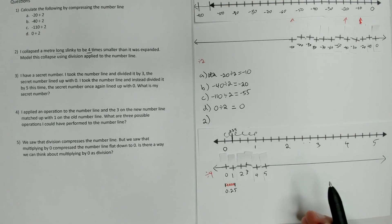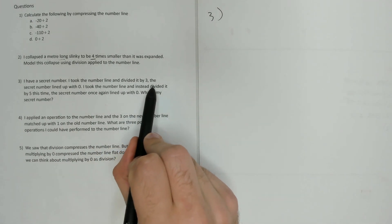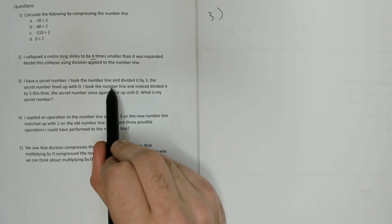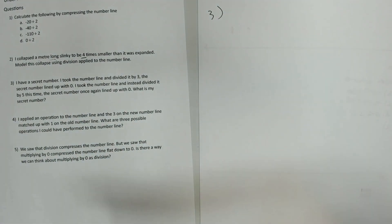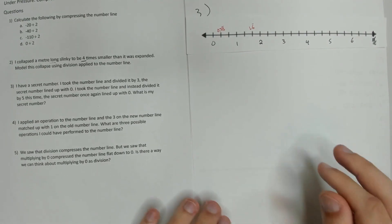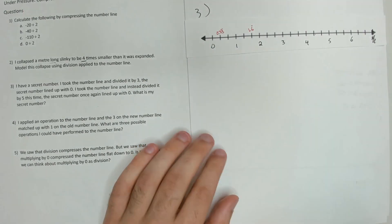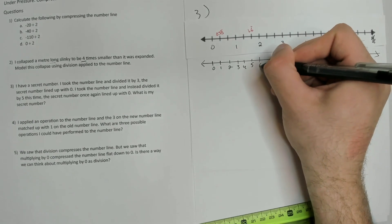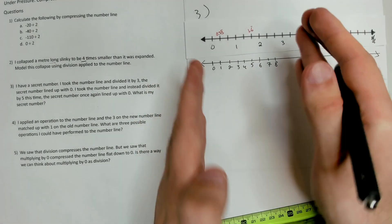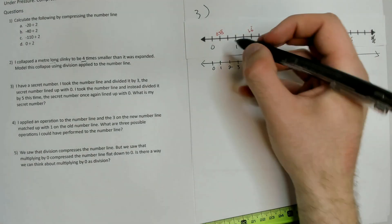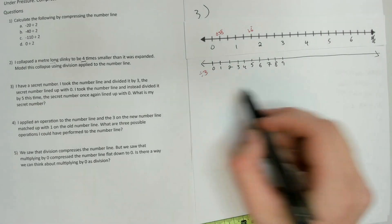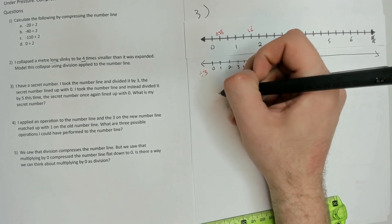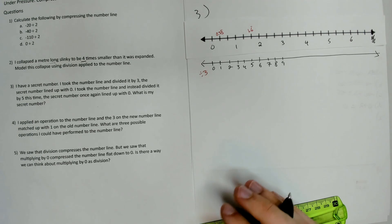I have a secret number. I took the number line and divided it by 3 — the secret number lined up with 0. Then I took the same number line and instead divided by 5 — the secret number again lined up with 0. What is my secret number? I could take a number line and divide it by 3, compressing all the numbers down. The number line divided by 3 has distances 3 times smaller. We're saying the secret number on here lined up with 0. Let's see if that also holds when we divide the number line by 5.